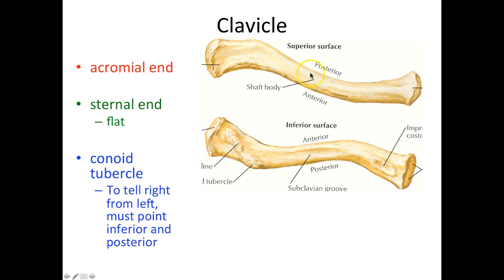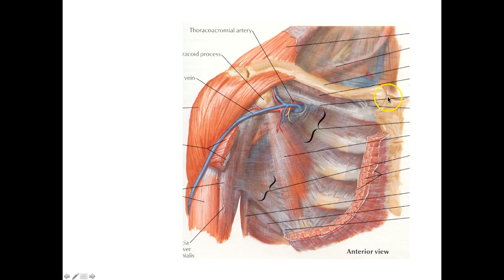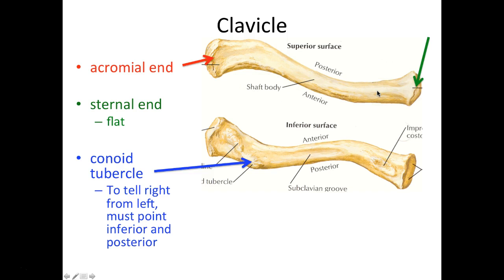We have a superior surface here and an inferior surface. On these views we're going to see the acromial end, which will be more of a flattened type of end. The sternal end is flat because this portion is going to butt up against your sternum right over here. The rest of this portion is a little bit more round, and you'll see the difference pretty clearly in lab.